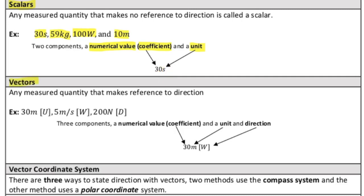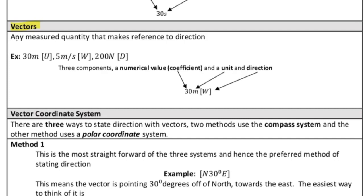Let's compare that to a vector quantity. With a vector quantity, they have the same thing as scalars, but also direction. Let's take a look at some examples: 30 meters up, 5 meters per second west, 20 newtons down. We have our numerical coefficient, our unit, and our direction.